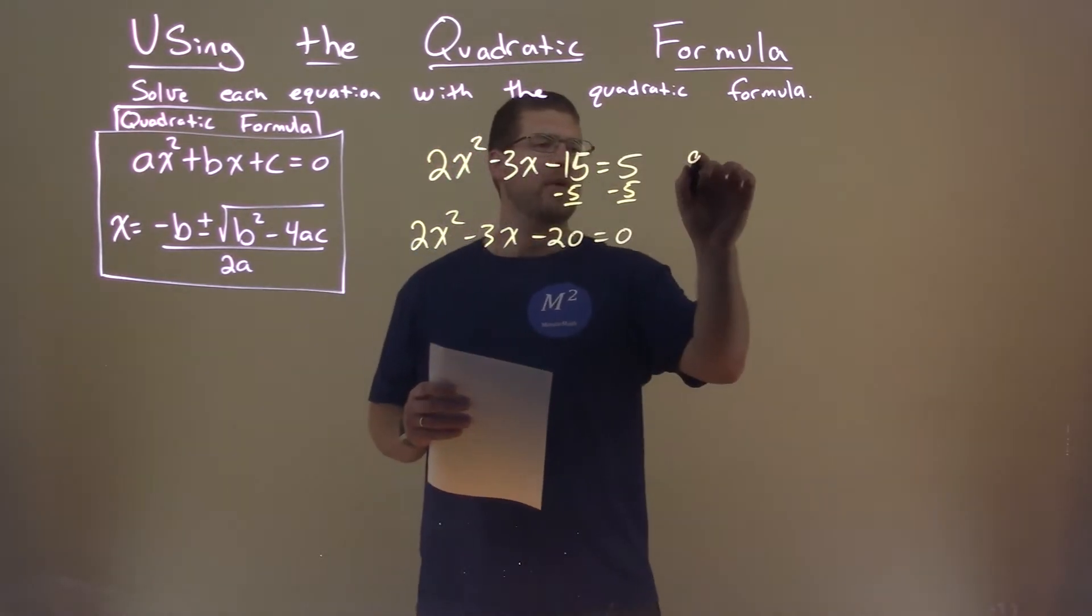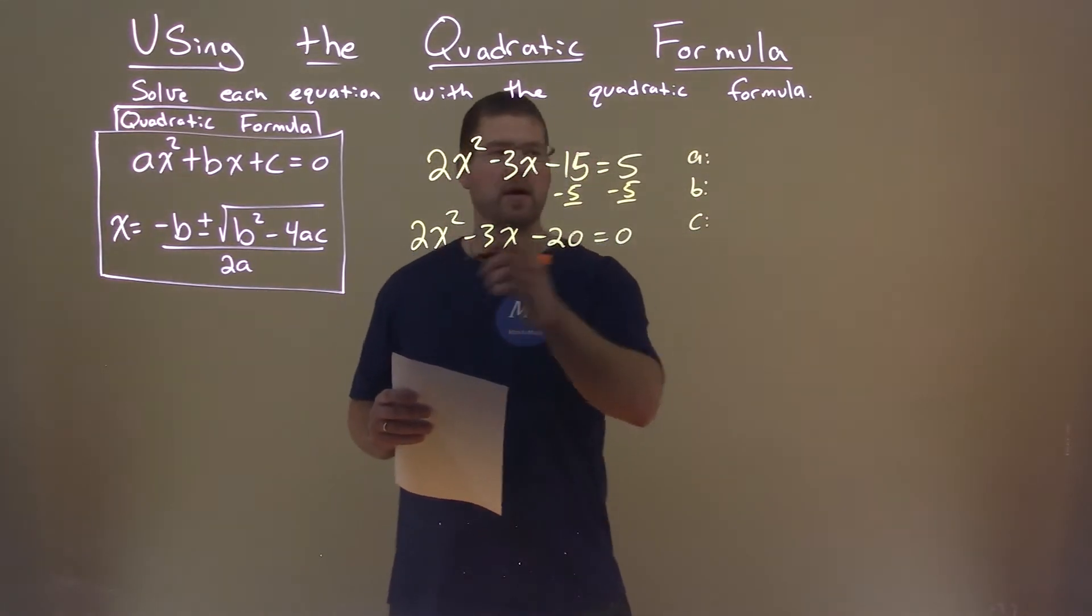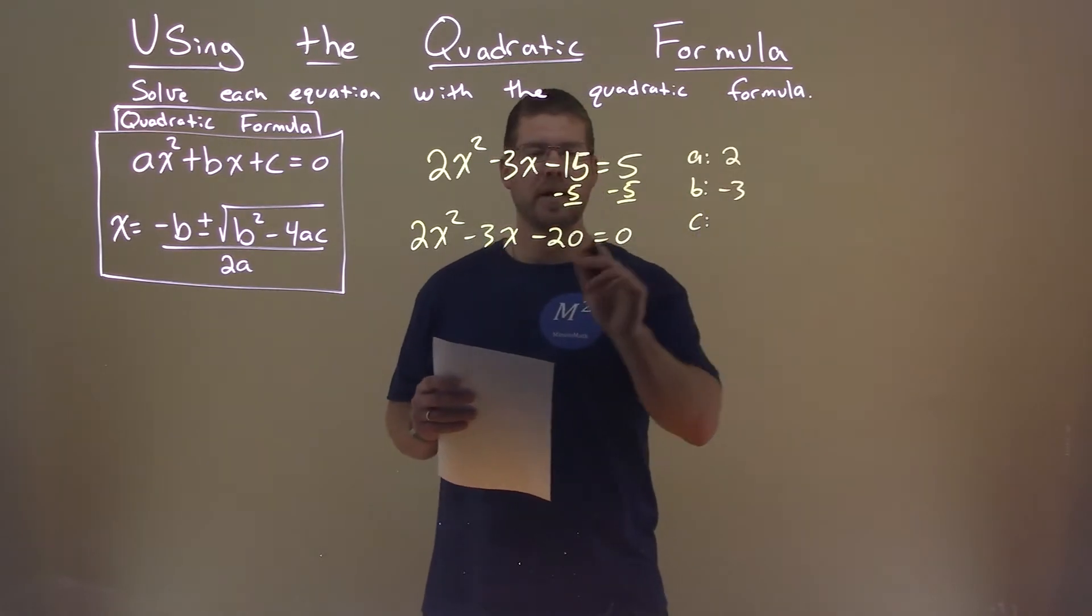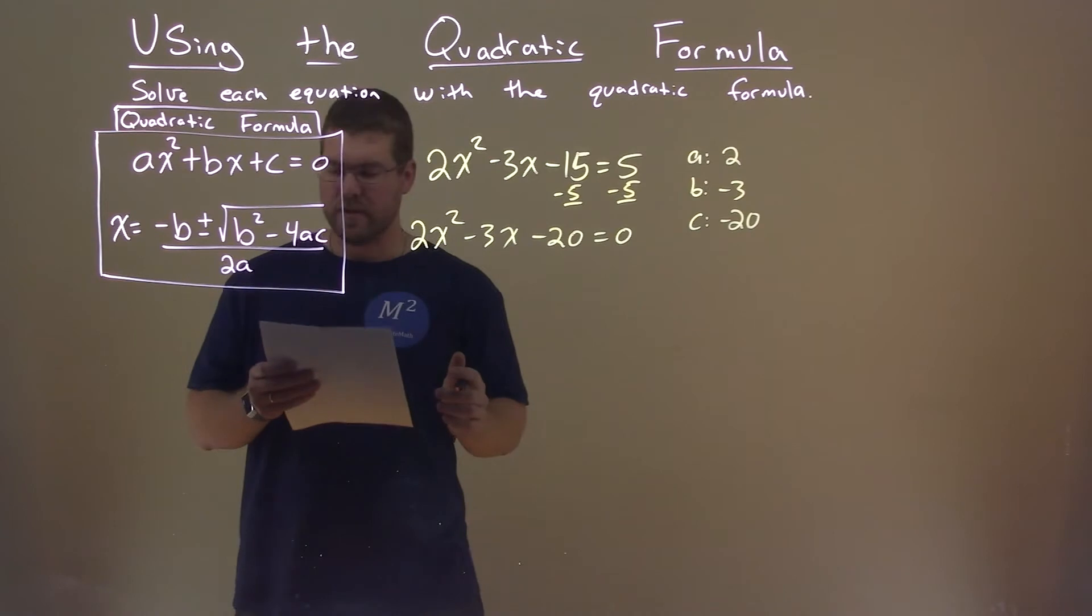We now want to find our a, our b value, and our c value. a value is 2, b value is negative 3, c value negative 20, and we can use the quadratic formula here.